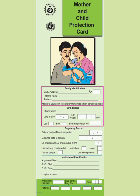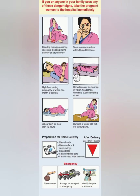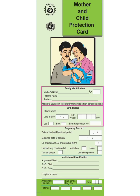Now for the last part — how to maintain the ANC register. This is the Mother and Child Protection card, which you may have seen at the sub-center level. This card is issued to the pregnant lady when she comes to the sub-center for the first time to register for her antenatal visits. It includes family identification, birth record, pregnancy record, institutional identification, sub-center name, PHC details, and hospital address.